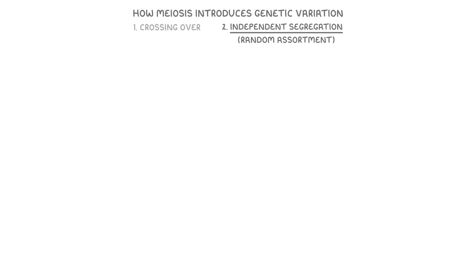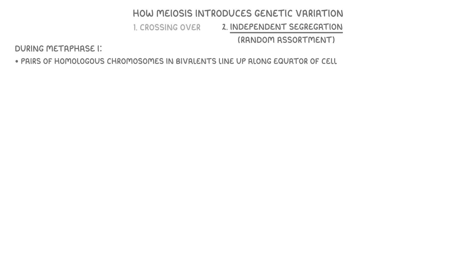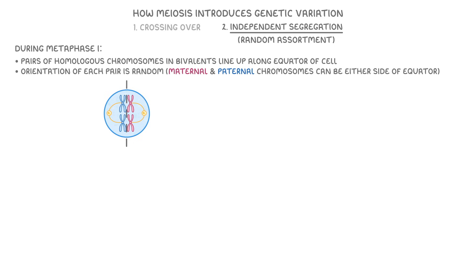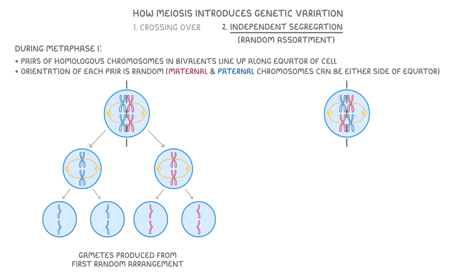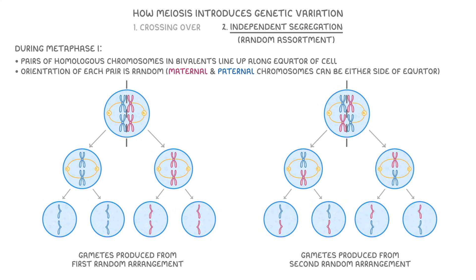Next, let's look at independent segregation, which is another way genetic variation is introduced to the gametes formed during meiosis. You might also hear it referred to as random assortment. It happens during metaphase one, when the pairs of homologous chromosomes in their bivalents line up along the equator of the cell. The orientation of each pair is random, so the maternal and paternal chromosomes may be on either side of the equator. Looking at the final gametes produced from each different random arrangement, we can see they're different — a different combination of maternal and paternal chromosomes ends up in the gametes. If you imagine this happening with 23 pairs instead of just the two shown here, it's easy to see how this introduces a lot of genetic variation.